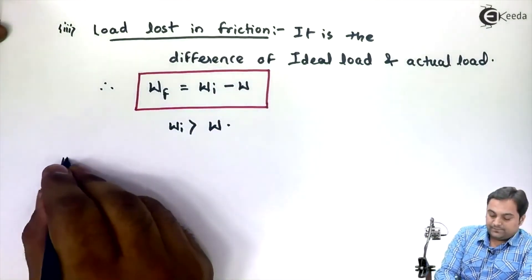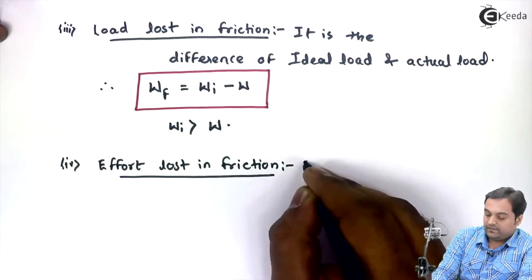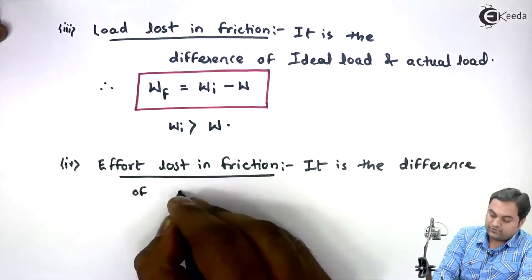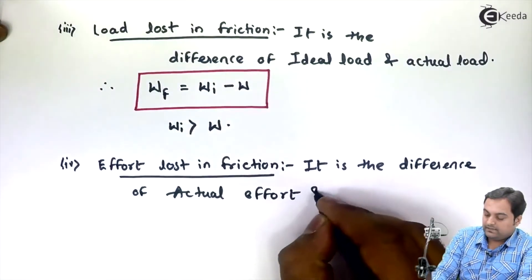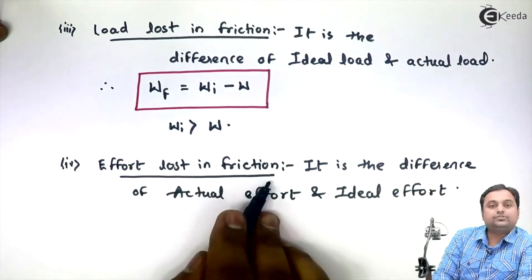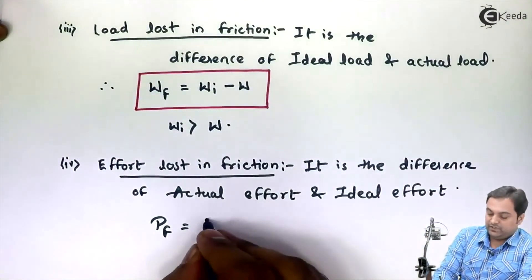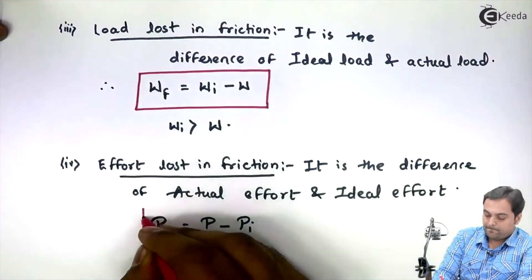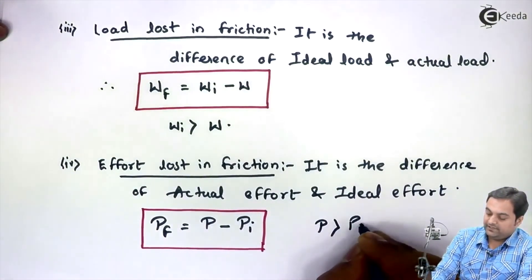Next is effort loss in friction. It is the difference of actual effort and ideal effort. Effort lost in friction is denoted by P suffix f and it is equal to actual effort P minus ideal effort. From this it is clear that actual effort would be greater than ideal effort.